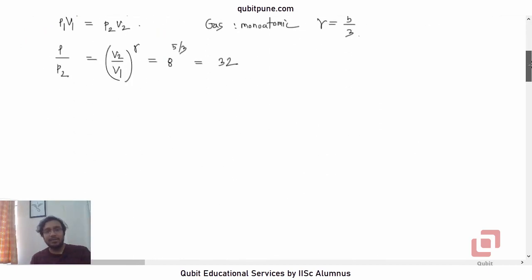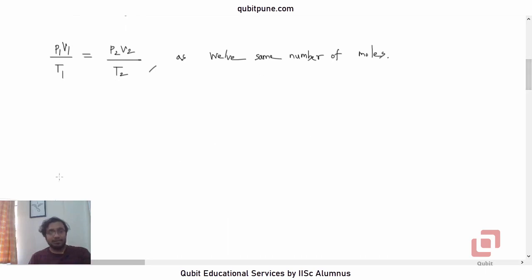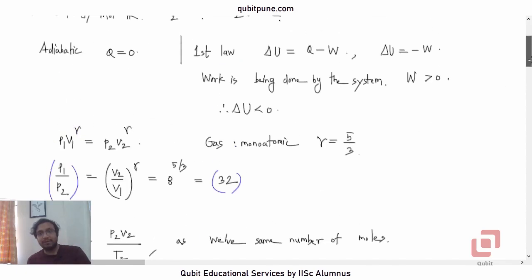The second equation is, because the mass is not changing, we still have the same number of molecules, so we can write P1V1/T1 = P2V2/T2. Therefore T2/T1 = (P2V2)/(P1V1). We found P1/P2 is 32, so P2/P1 will be 1/32. And V2/V1 is 8.